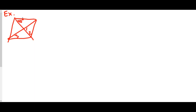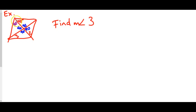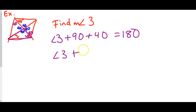Another rhombus example: we know 40 degrees and we want to find the measure of angle 3. In a rhombus, the diagonals always meet at a 90-degree angle, so all of those center angles are 90. The angle is bisected, so the other side is also 40 degrees. Since angles opposite each other are the same, angle 2 is also 40, and bisected so that side is 40 as well. Now we have a triangle: 90 plus 40 equals 130, and subtracting from 180 gives us angle 3.